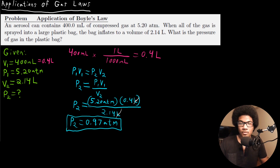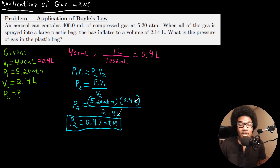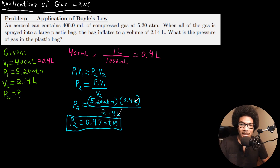Does this make sense? With these laws, you can do a quick sanity check. We expected the pressure to drop dramatically because we expanded the volume dramatically. It makes sense that we go from 5.2 atm to a final pressure of 0.97 atm when we inflate this bag. That's an application of Boyle's Law.